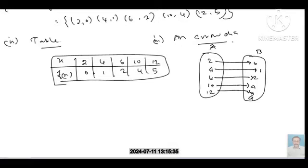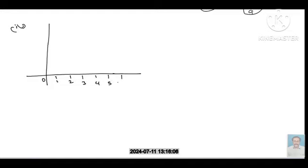For the graph, draw the x-axis and y-axis. This is 0, 1, 2, 3, 4, 5, 6 on the y-axis. On the x-axis mark 2, 4, 6, 8, 10.